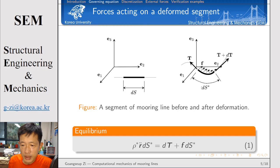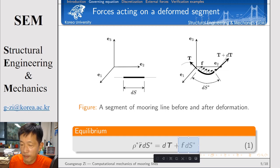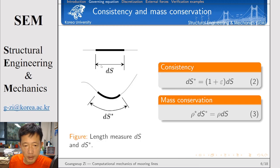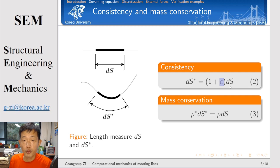Before deformation, ds* must be given by ds. We need to compare these two configurations to build the governing equations. If you consider the force equilibrium of the deformed segment, the inertial force must be equal to the change of internal force plus the applied external force. Comparing the two segments, there must be consistency. The initial segment is deformed to ds*, so between these two lengths there must be the relation: (1 + strain) times ds. Although our problem is a large deformation problem, we want to consider small strain only, so we can build this linear relation.